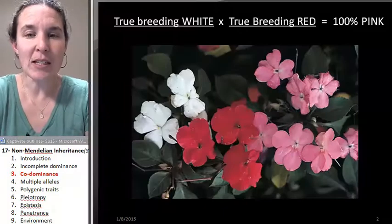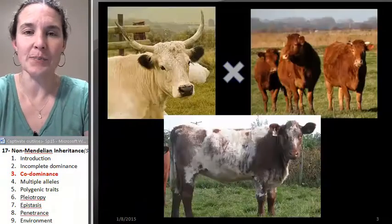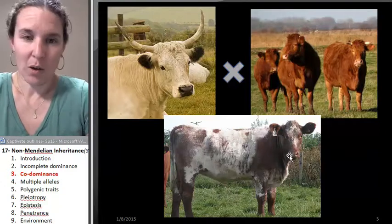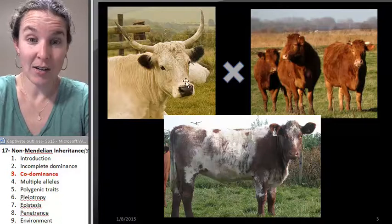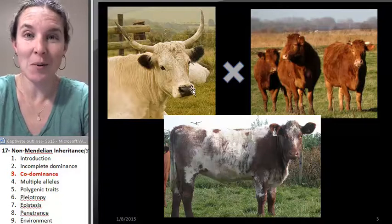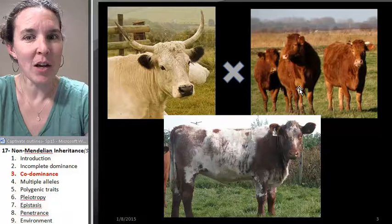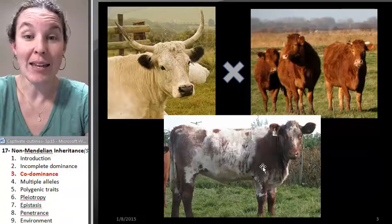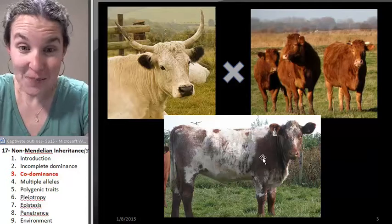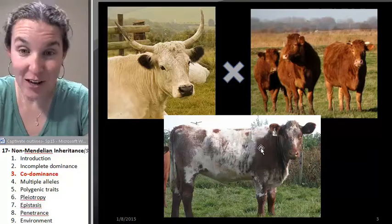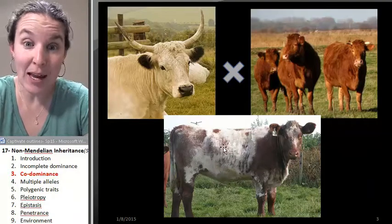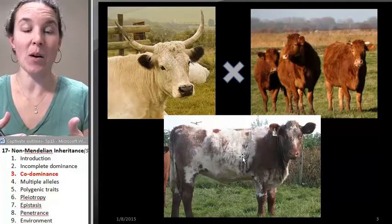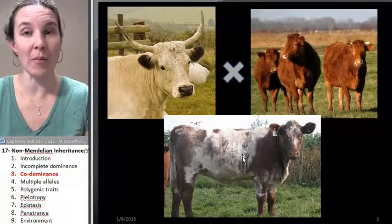Another example of this is cow color. There's a cow variety. Here's my pretty little white cow. Here's my pretty little red cow. You combine them together, you get a cow called a roan cow. And if you look closely, it's the expression of red cow bits and white cow bits. And that is an example of codominance.